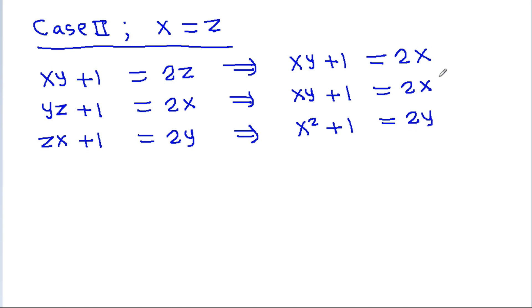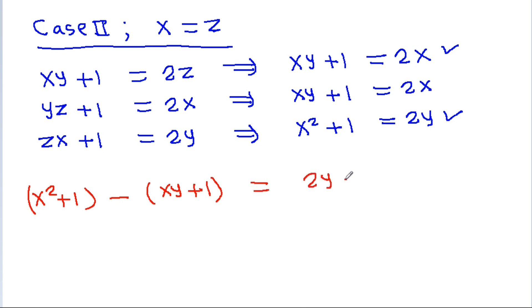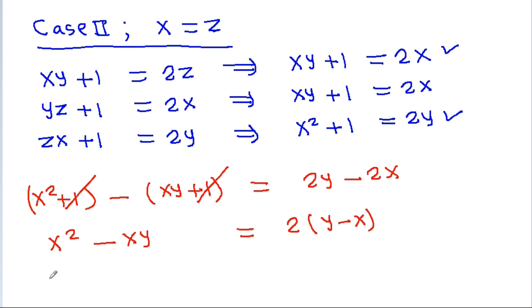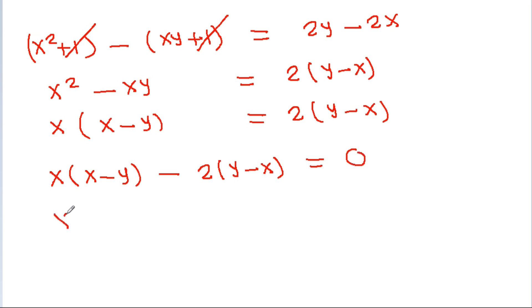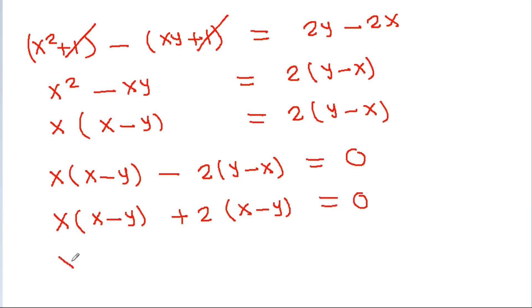If we subtract equation 1 from equation 3 (with x equals z substituted), then x squared plus 1 minus xy minus 1 equals 2y minus 2x. The 1s cancel and we get x squared minus xy equals 2y minus 2x. Taking x common gives x times x minus y equals 2y minus 2x, so x times x minus y plus 2x minus 2y equals 0, which is x times x minus y minus 2 times y minus x equals 0.